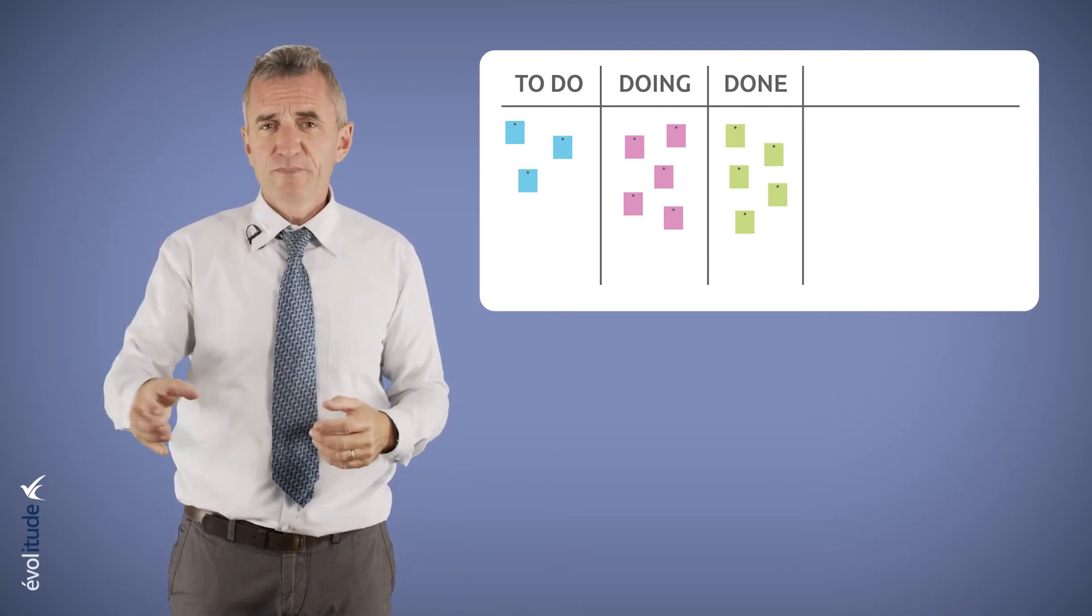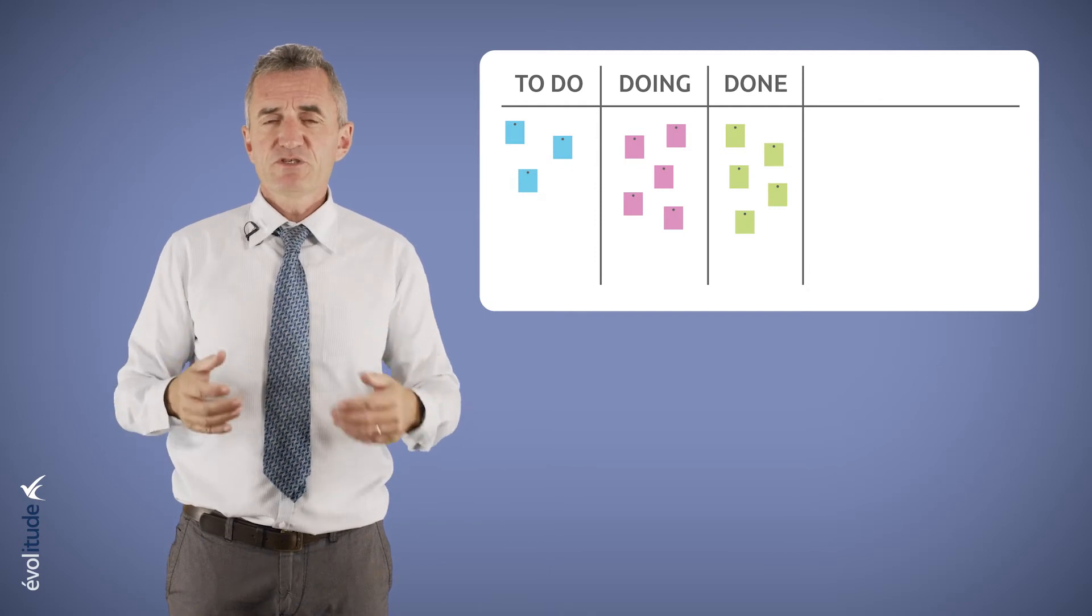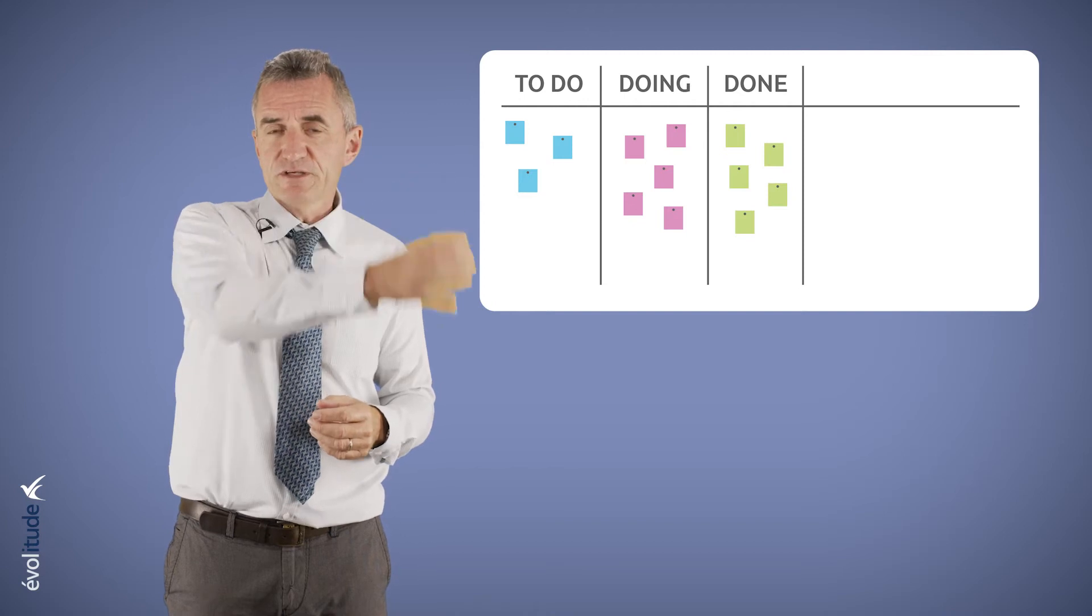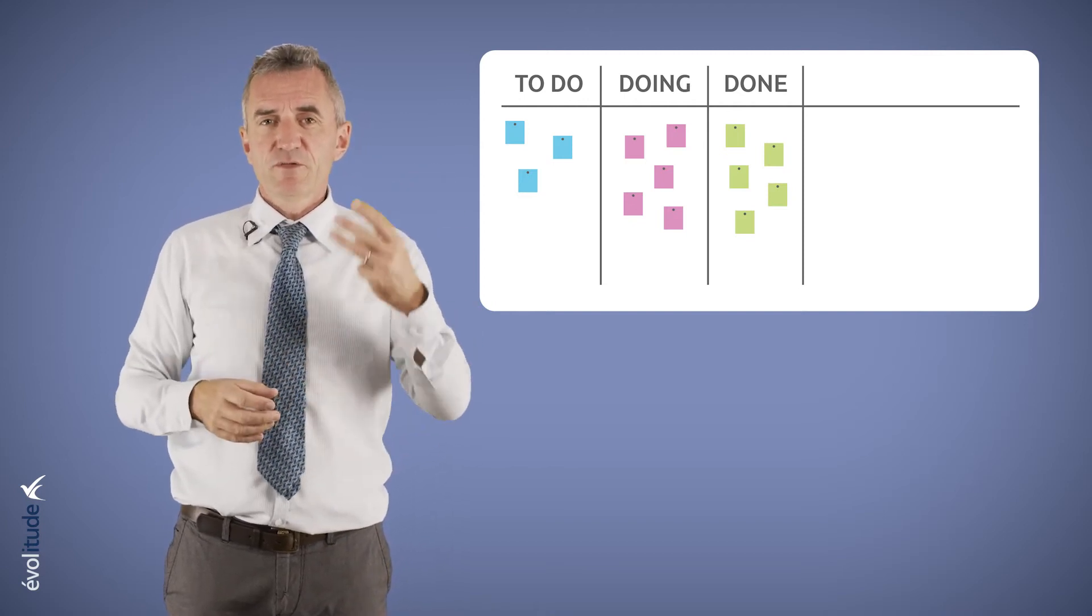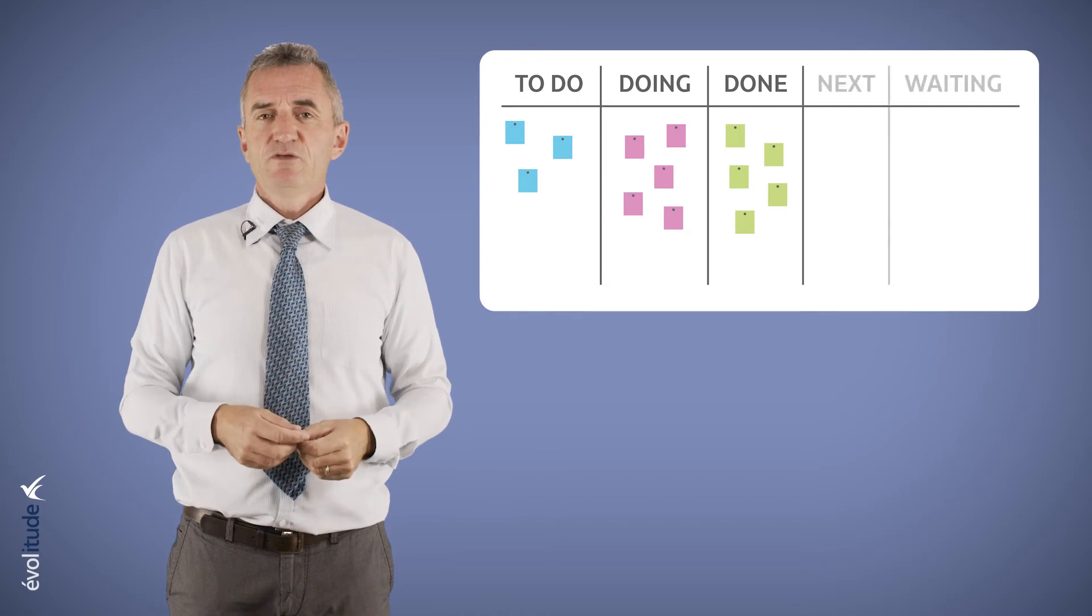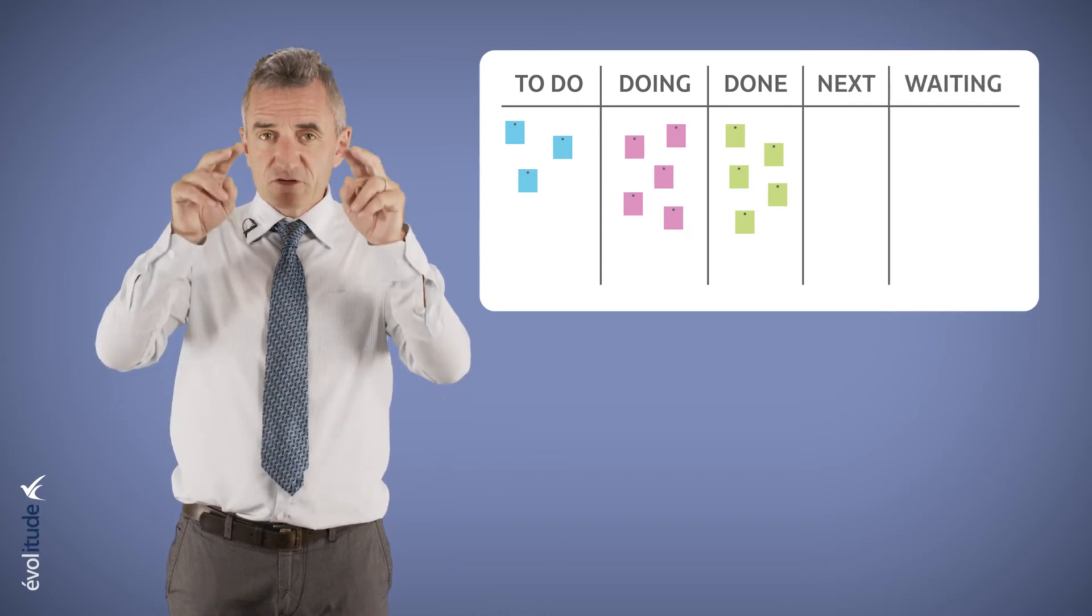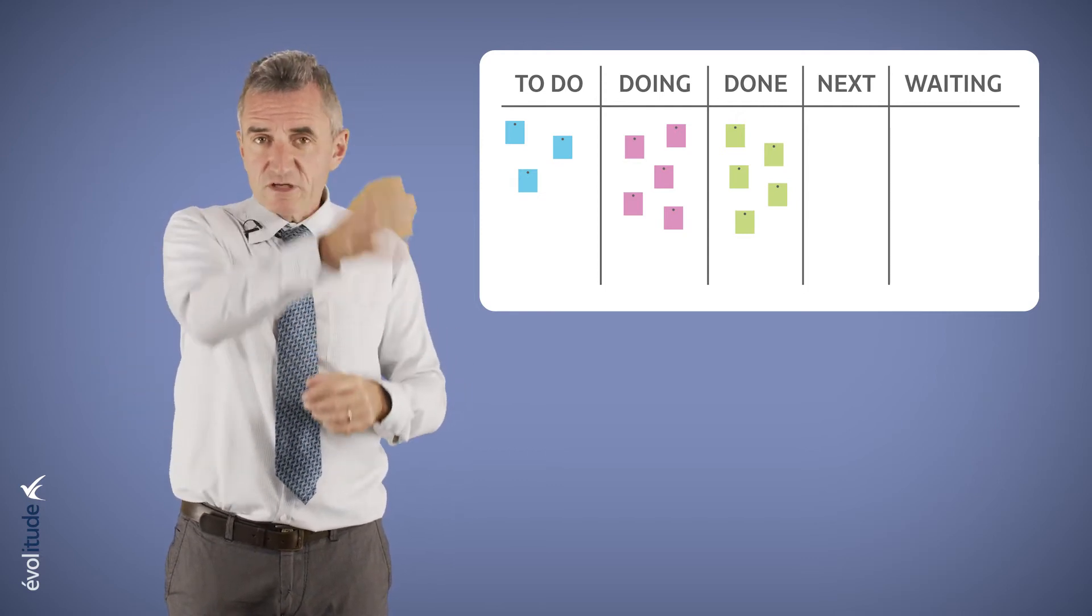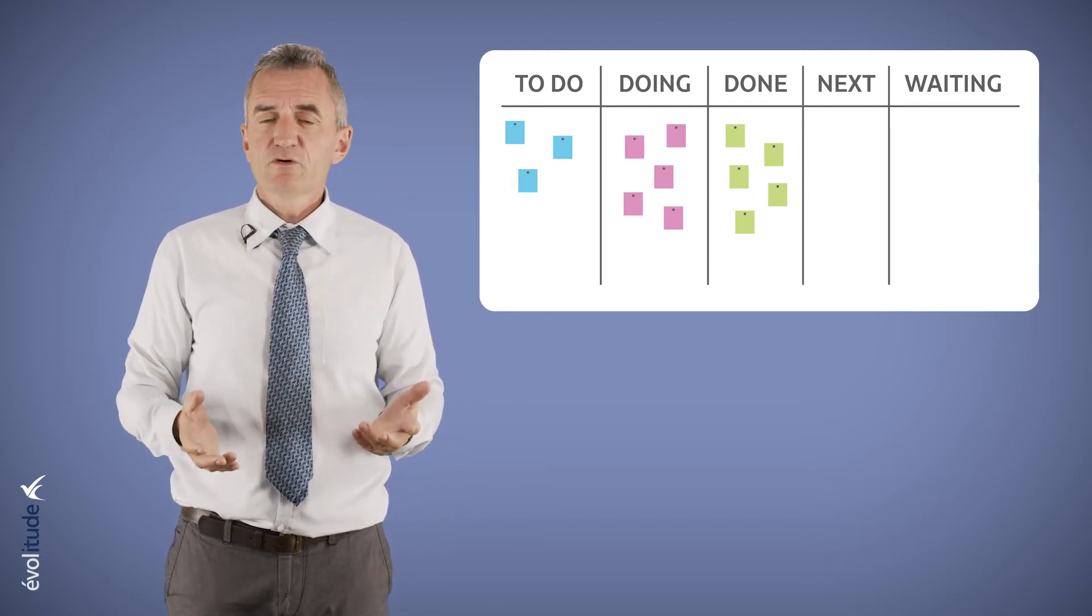In each column, each collaborator positions their post-it corresponding to the tasks to be done, in progress and done. They answer the three questions and update their post-it notes. You can also add a next column to place medium or long-term tasks and a waiting column on what is put on hold.